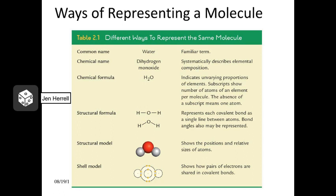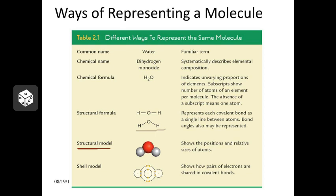There are other ways to represent molecules as well. First, we have the chemical formula like H2O. We also have a structural formula, which I often refer to as a line model, where bonds between atoms are shown with little lines — specifically covalent bonds. There are also structural models, which are three-dimensional models of a molecule. Finally, shell models show the electron shells and the placement of electrons, so you can see the interactions of electrons between different atoms.